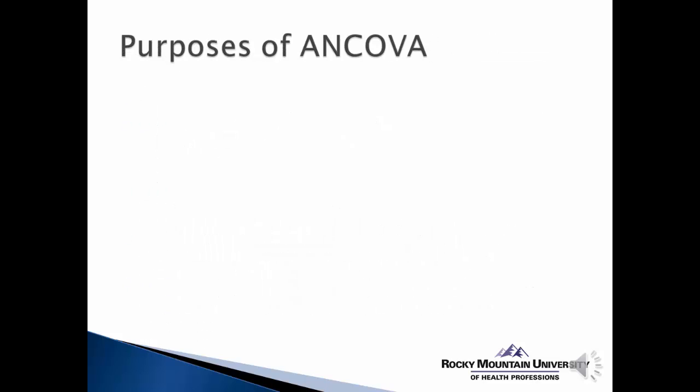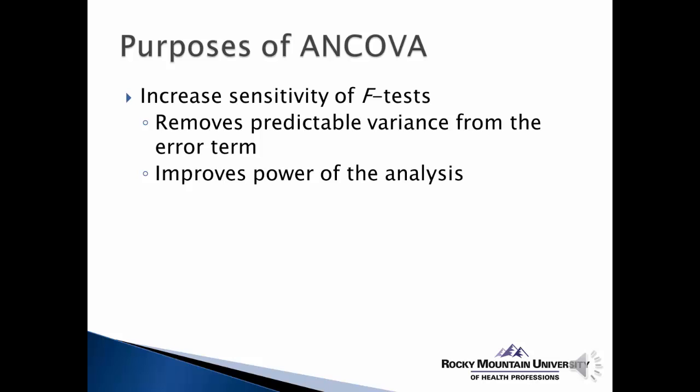So why is this important? Why use ANCOVA versus just doing a regular ANOVA with a known covariate? Well, ANCOVA helps us increase the sensitivity of the F-test. Because we're removing the predictable variance from the covariate from the error term, that actually makes the error term smaller. And as you remember from the ANOVA formula, when we have a large numerator and a small denominator — which is the error term — we have a likelihood of getting a large F-score, and then we're more likely to reject the null hypothesis.